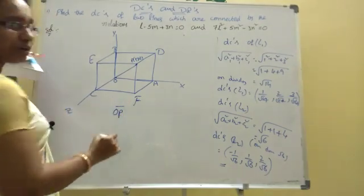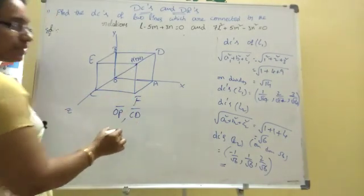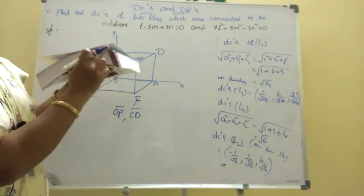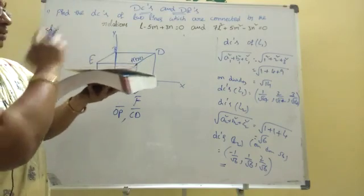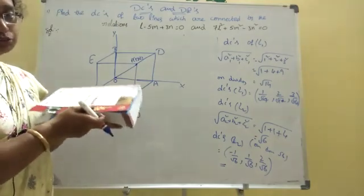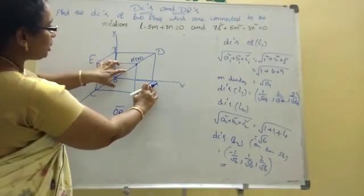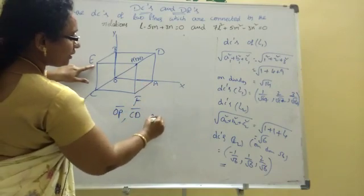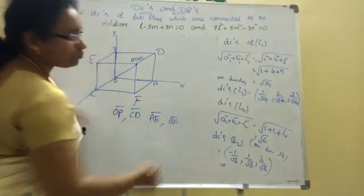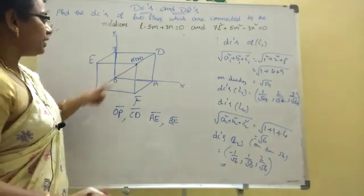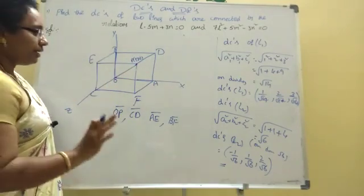OP is the diagonal. The CD is also a diagonal. The cube has 4 diagonals. Let's choose this figure: a, a, a and b. The four diagonals are: this is OP, this is CD, this is AE, this is BF. So this is 4 diagonals.